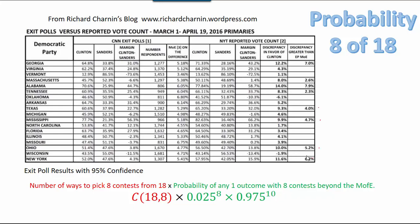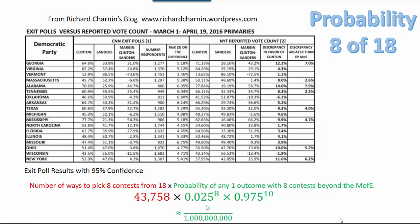The way we calculate that is to count the number of different ways to pick 8 contests from 18 — called C(18 choose 8) — which you can calculate on your calculator or with a formula. Then we multiply that by 0.025 to the 8th power, because there were 8 contests where that probability came up, and then 0.975 to the 10th power. When we do that, it turns out to be about 5 out of 1 billion — there's only a 5 in 1 billion chance that, if exit polls were done correctly and election results were reported accurately, any 8 out of 18 contests would exceed the margin of error.